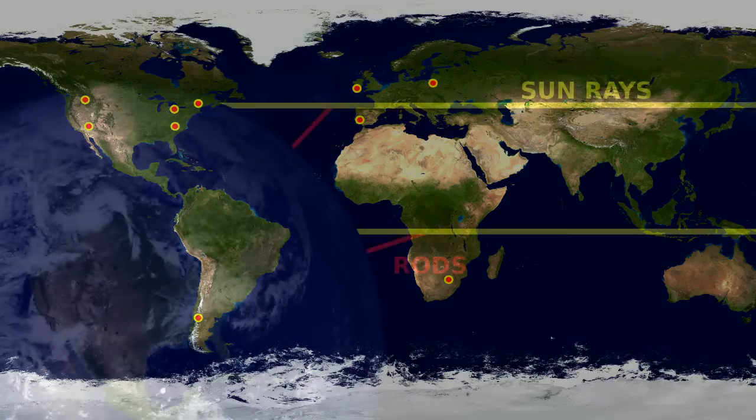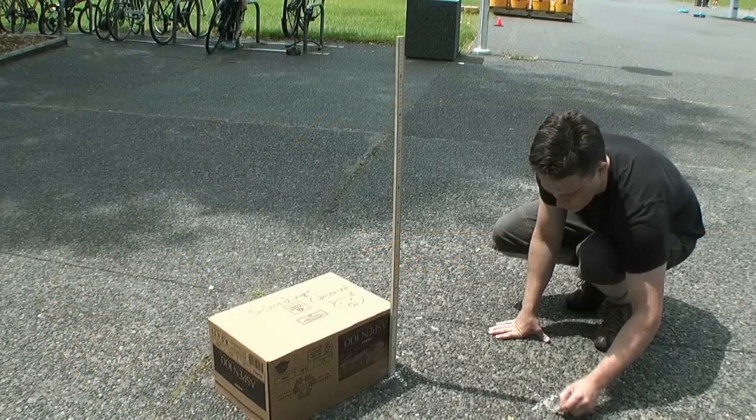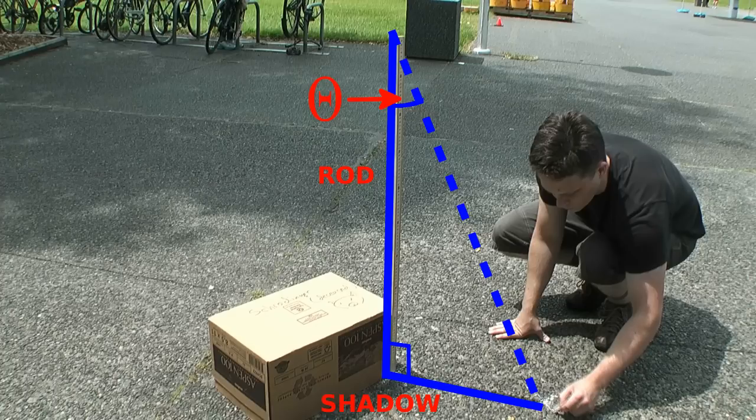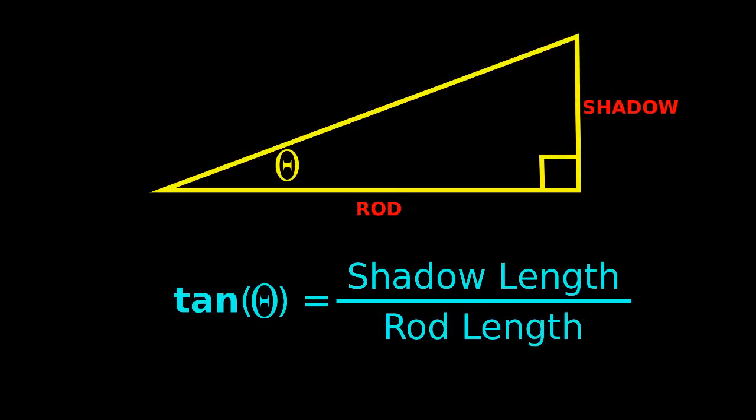With these pairs, getting the radius of the Earth is just trigonometry. The first thing we need is the angle of the shadows cast at the two locations. To get this, we take the measurements of the length of the rod and the length of its shadow, and then make a right triangle with them. The angle can either be measured with a protractor or calculated using the arctan function.